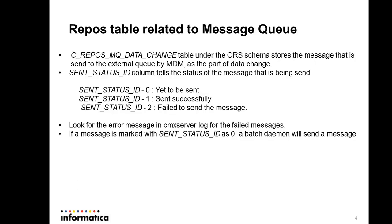If a message is marked with send_status_id as 0, there will be a batch streamer which will keep monitoring this table. If it finds such messages with send status as 0, it will push those messages to the message queue.